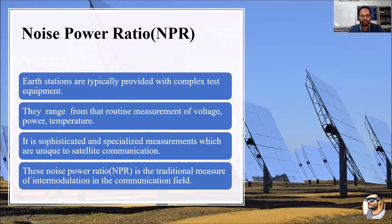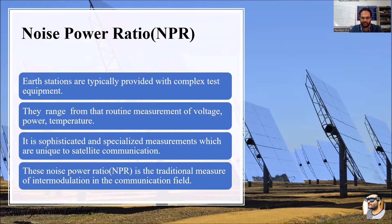First, we need to consider noise power ratio, also known as NPR. Earth stations, with respect to power, are typically provided with complex test equipment. This particular equipment measures several parameters like voltage, power, and temperature. There will be a routine measurement — as we give continuous power supply to the earth station for communication with the satellite, we need special equipment to measure the noise power ratio.